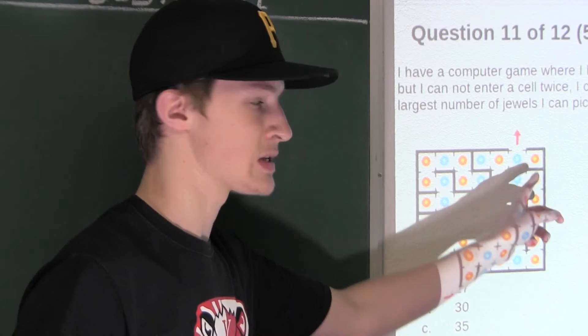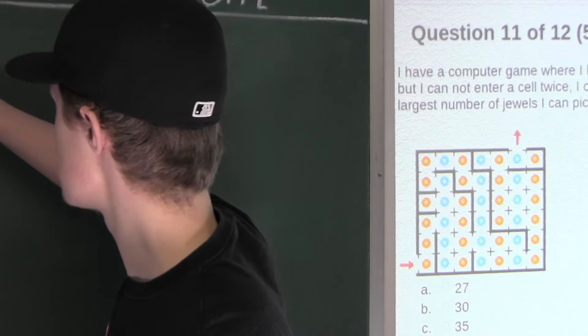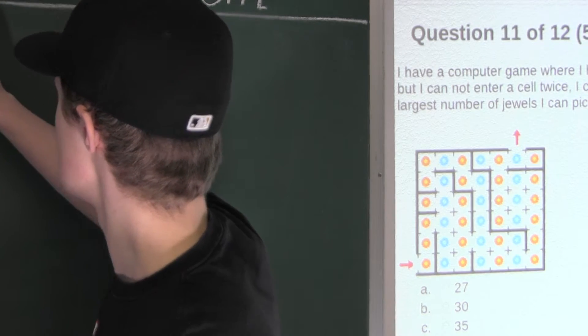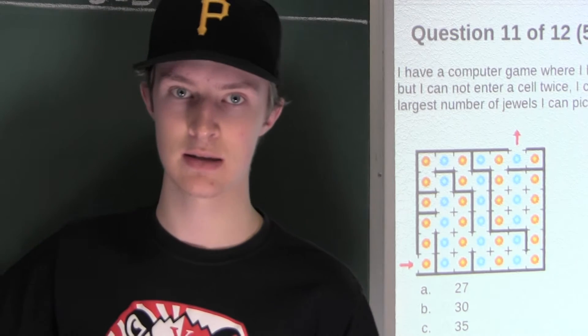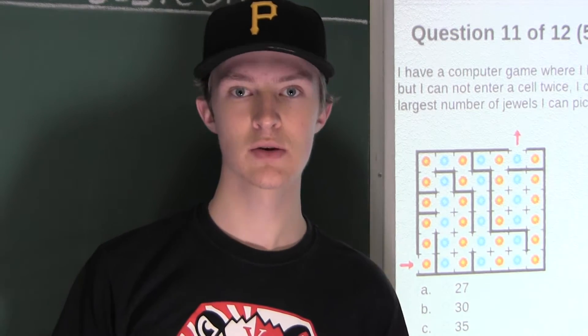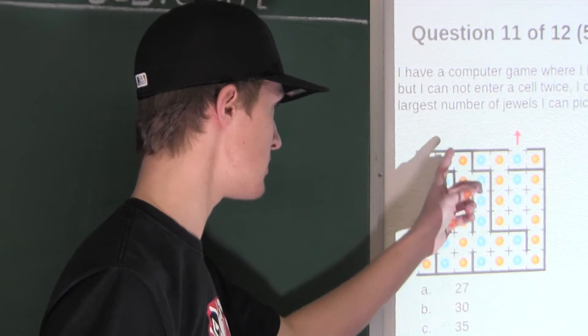And by 1, 2, 3, 4, 5, 6, 7. So we have 6 times 7 cells, which means we also have 6 times 7 jewels. So that is the total number of jewels in this maze.